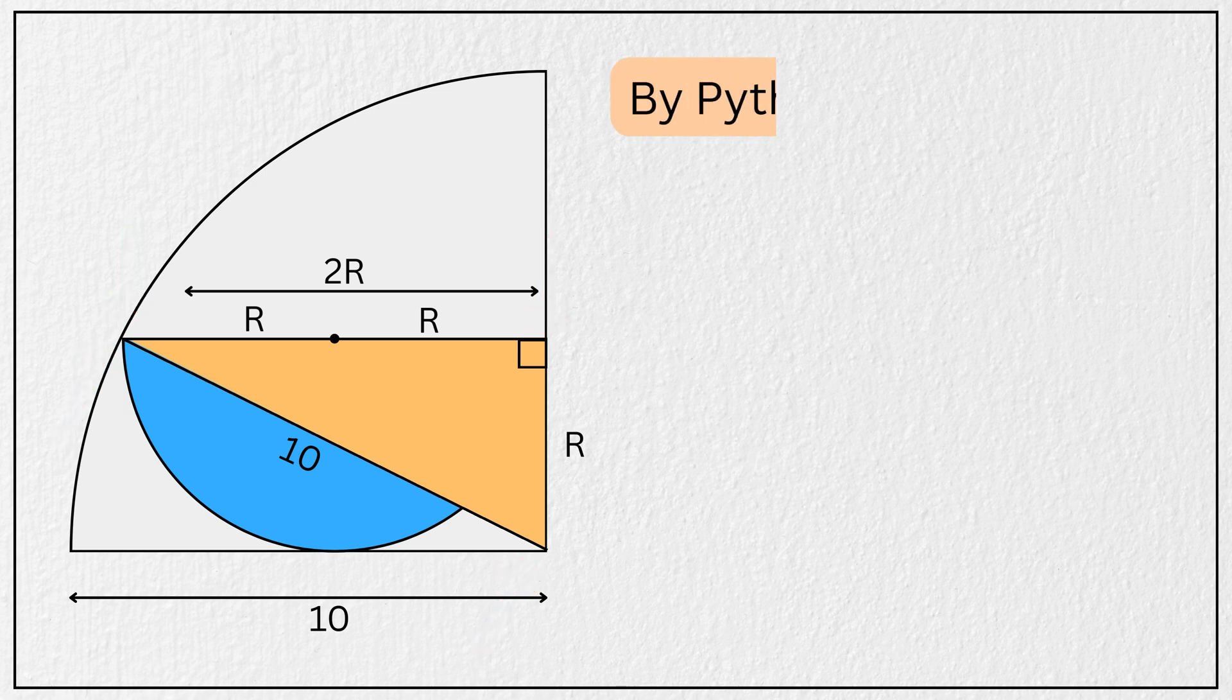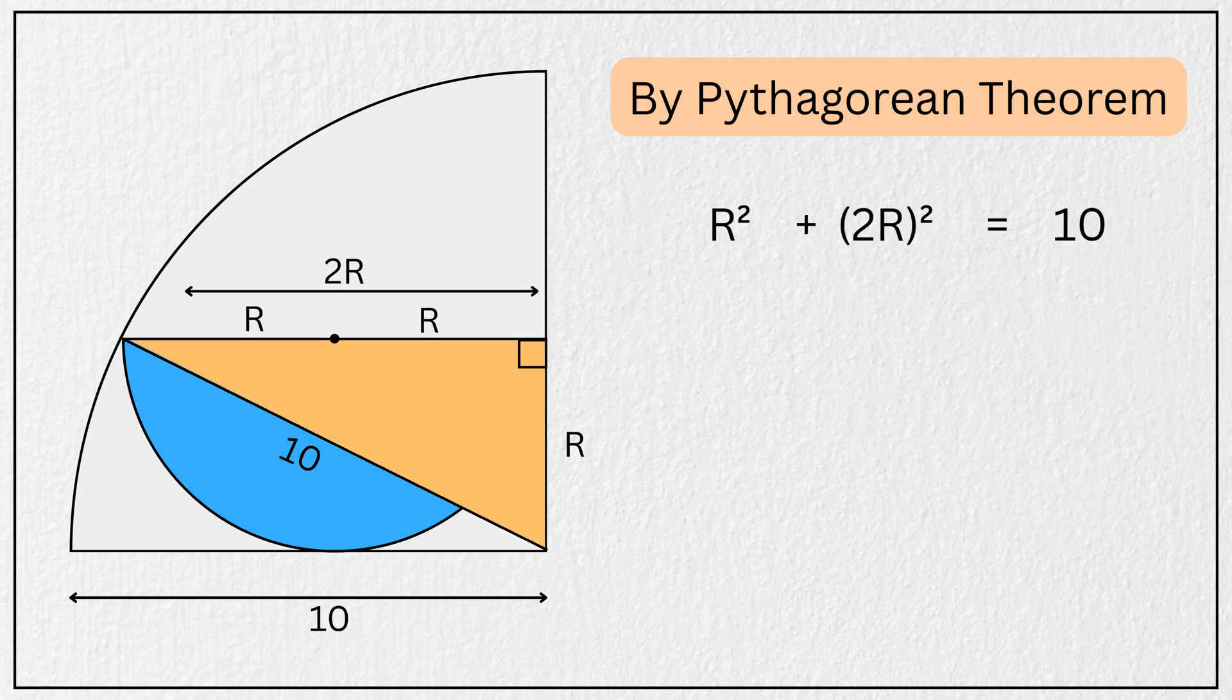So using everyone's favorite, the Pythagorean theorem, we have r squared plus 2r squared equals 10 squared. Simplifying this, we get r squared plus 4r squared equals 100.